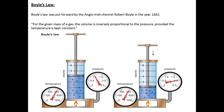Let's understand this with a diagram. Here you can see two gauges — one is the pressure meter and the other is the temperature meter. We have to keep the temperature constant and fixed. This is a cylinder that we have filled with gas, and this is a movable piston. As we move the piston, the change you observe will be in pressure and volume.